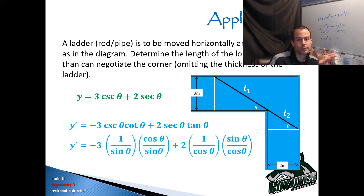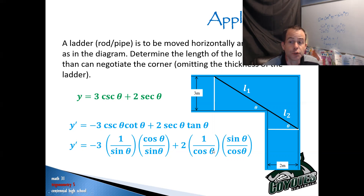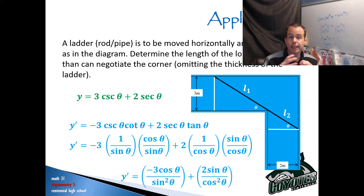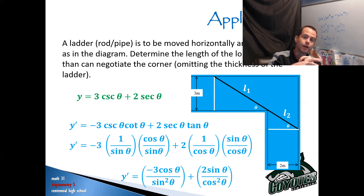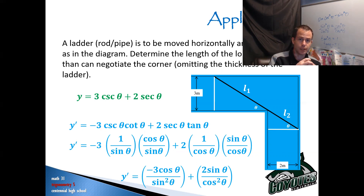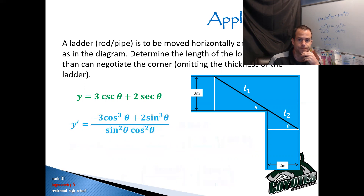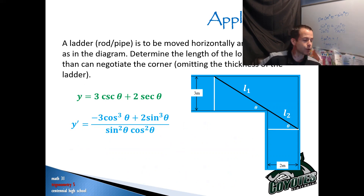Cosecant is 1/sine, cotangent is cos/sine, secant is 1/cos, and tangent is sine/cos. So cleaning this up: the first term becomes negative 3 cos theta over sine squared theta, and the second term becomes 2 sine theta over cos squared theta. Adding these with a common denominator of sine squared theta times cos squared theta gives: (negative 3 cos cubed theta plus 2 sine cubed theta) over (sine squared theta cos squared theta). The derivative doesn't exist at zero and π/2 — those are the non-permissible values.